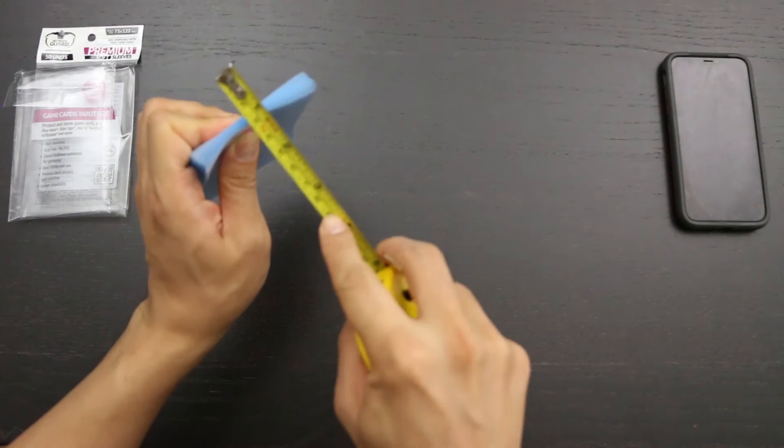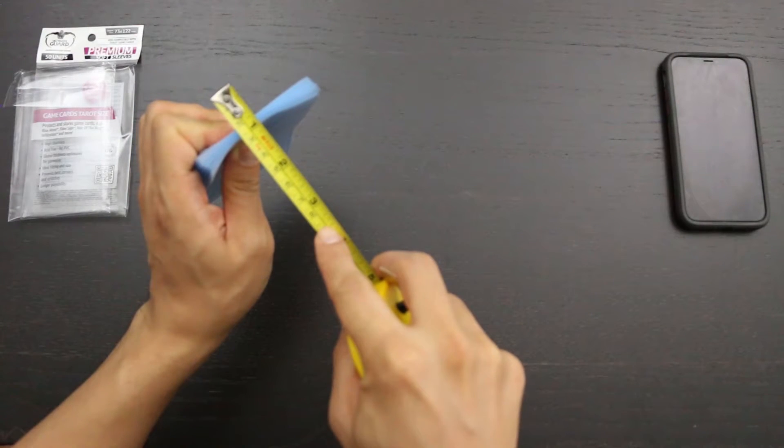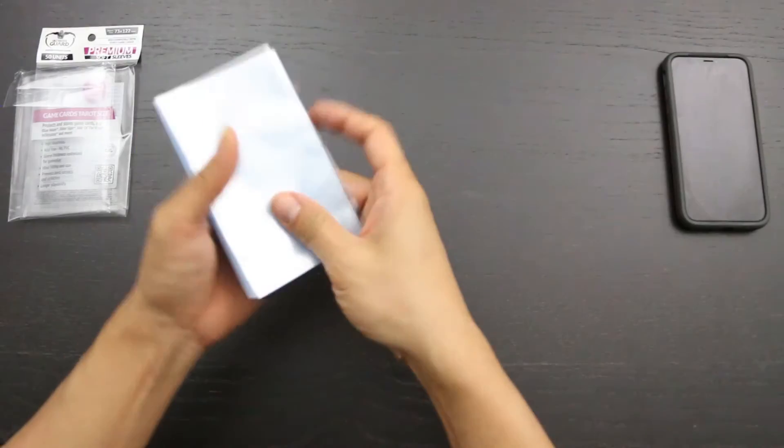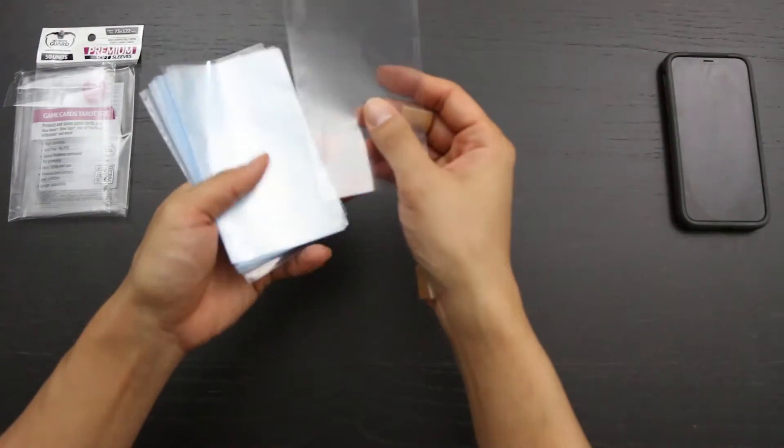Now to check the thickness of these sleeves. 50 sleeves comes in at 5mm, which makes each sleeve 100 microns thick, or 50 microns each face.